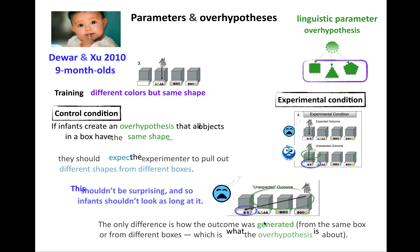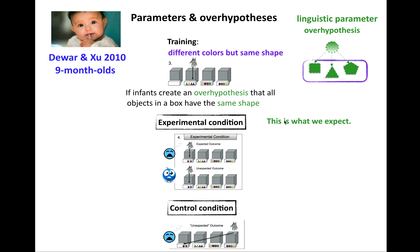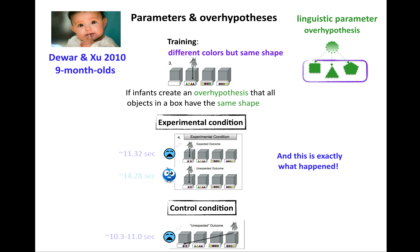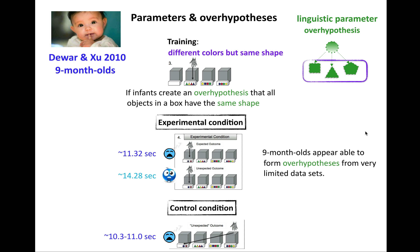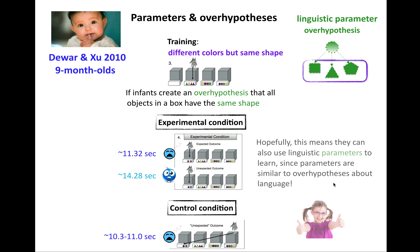This is what we expect if infants are able to form an over hypothesis that all objects in a box have the same shape — and that's exactly what happened. The different looking times across conditions show infants are surprised when different shapes are generated from the same box, because it violates the over hypothesis. Since this is happening at nine months old, the idea is that nine-month-olds' ability to form over hypotheses from limited data gives us hope that they can also use linguistic parameters, which are similarly abstract generalizations connecting to more specific properties.